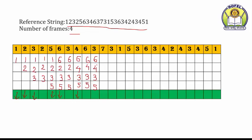Then 7 — 7 ke liye page fault hoga kyunki 6, 4, 3, and 5 hi pages memory ke andar hain. So 7 ke liye replacement karna padega. Victim pages hain 6, 4, 3, 5. Ab sequence dekho — 3 recently use hua hai, usse pahle 6, usse pahle 4, then 3, then 6. Oldest page kaunsa hai — page number 5, kyunki woh bahut pahle use ho chuka hai. So 5 ko replace karna hai. Frames: 6, 4, 3, 7. That is a page fault.